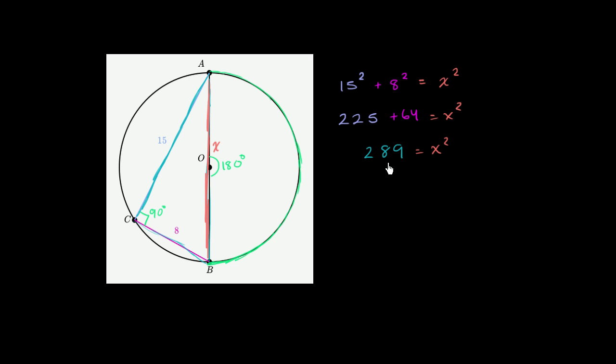And then 289 is 17 squared. And you could try out a few numbers if you're unsure about that. So X is equal to 17. So the diameter of the circle right over here is 17.